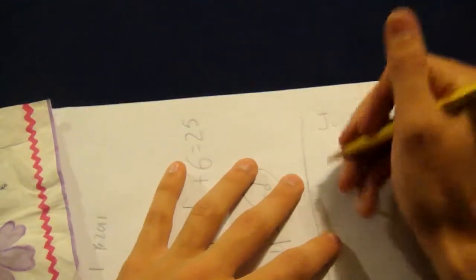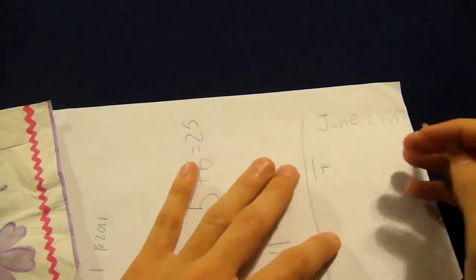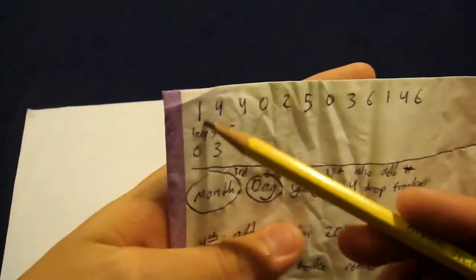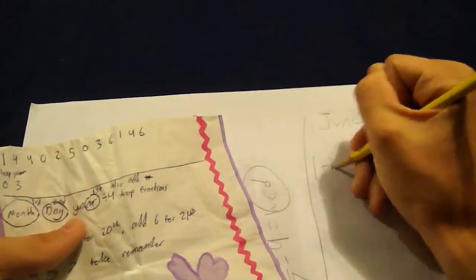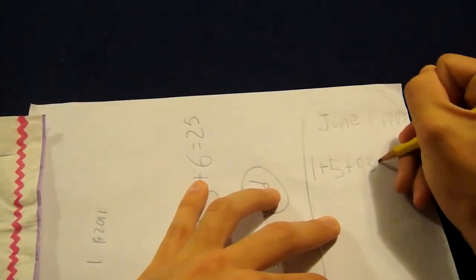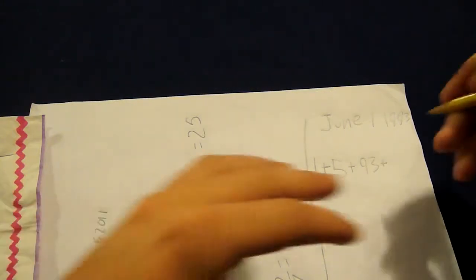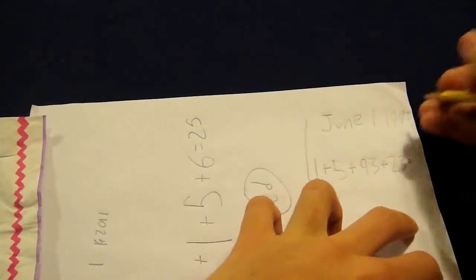You can start off with the easy thing. You can start off with the day. So it was on the first. Plus the month. If you memorized it, you would know it's a five. If not, just refer to the chart and you can see January, February, March, April, May, June. So that's a five. Plus the year, which is 93. Plus the year divided by seven, you get four dropping all fractions. And that is 23, I believe. Yep, 23. And then you're going to... you don't actually need to add it, but I'll just show you.